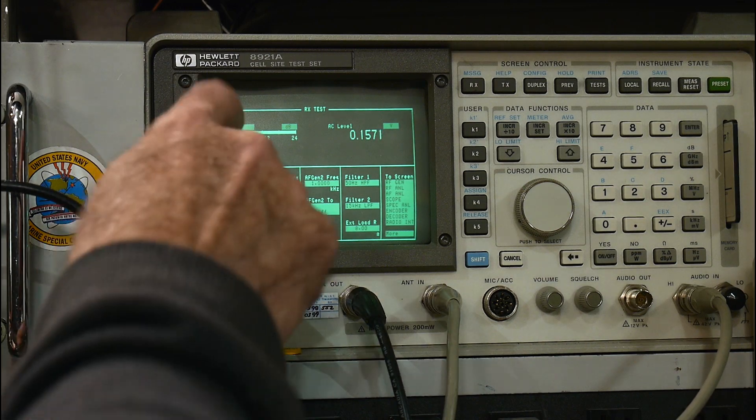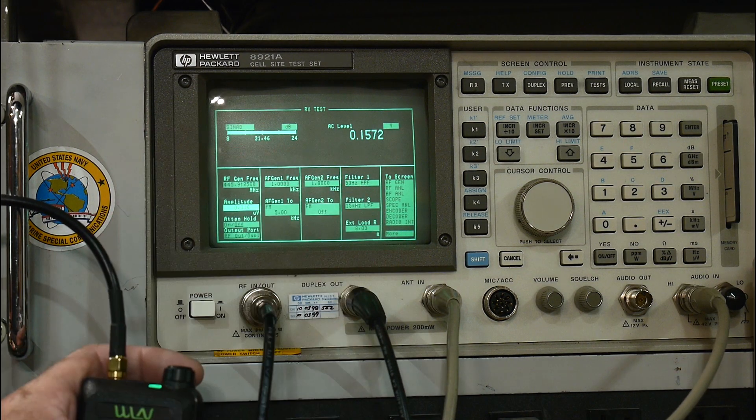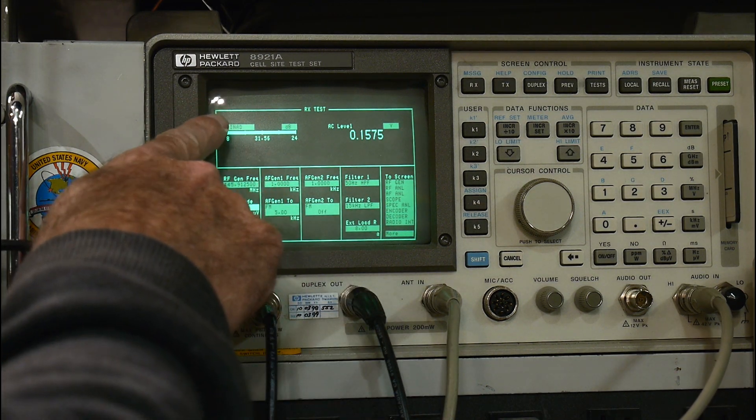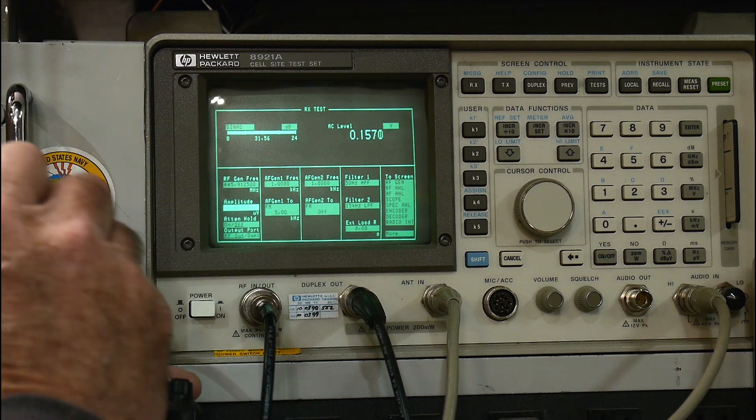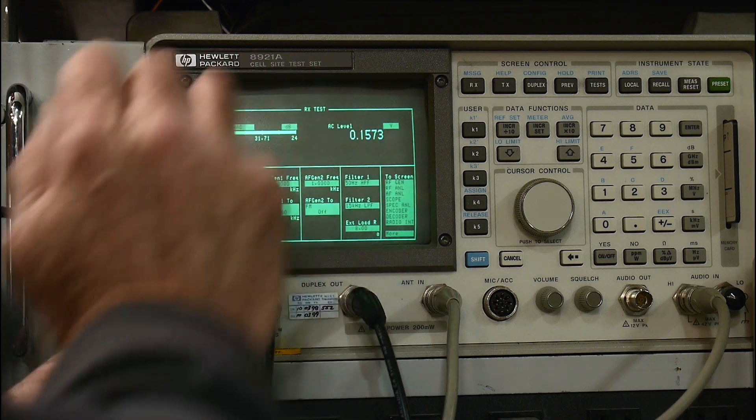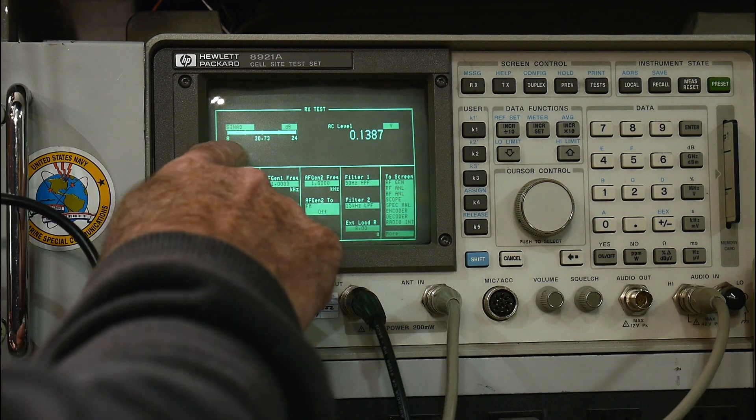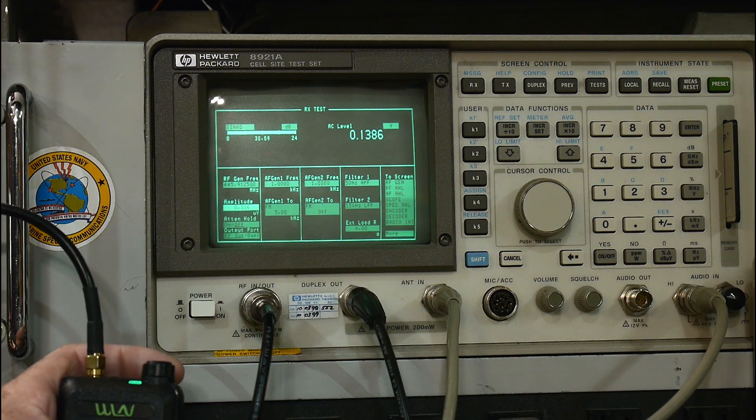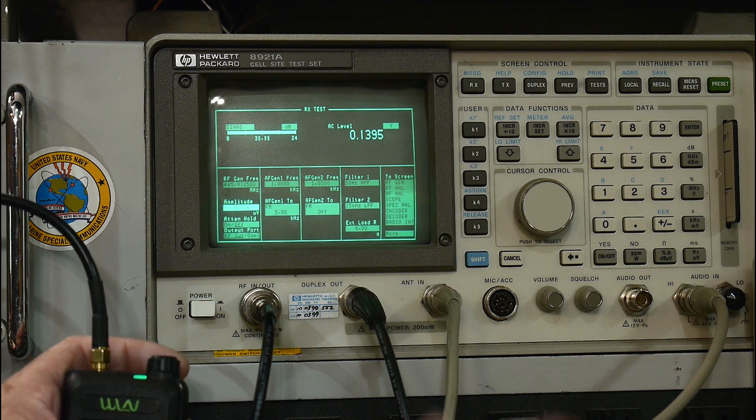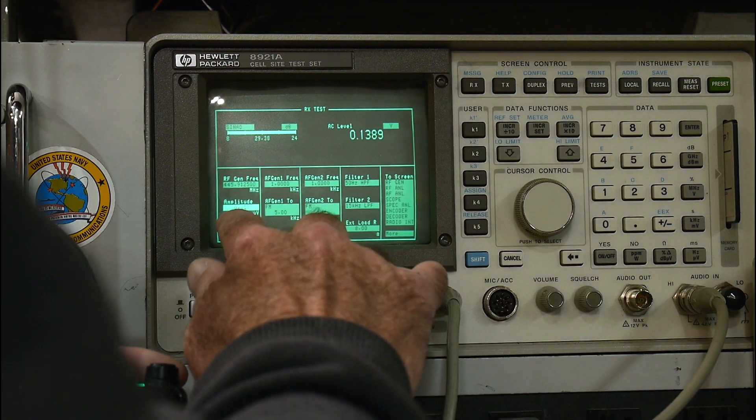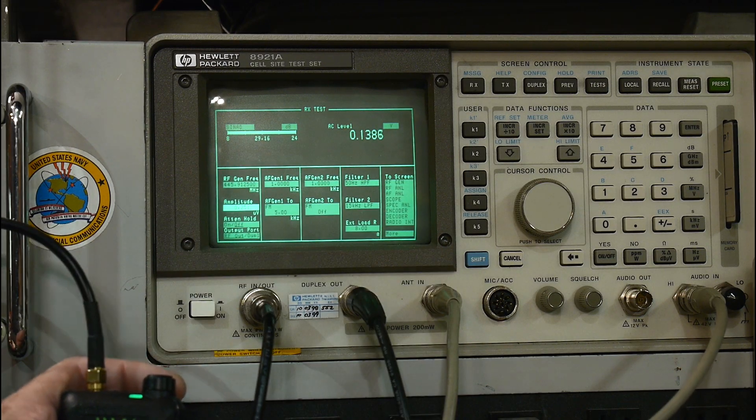So we turned it up and we look up here and there's a chart that says SINAD in dBs. So this is under receiver test. And so it's measuring 30 dB SINAD, which is very good. And so now we lower this number a bit here and our SINAD went down.